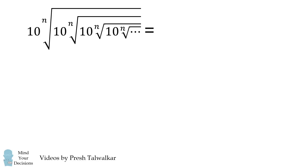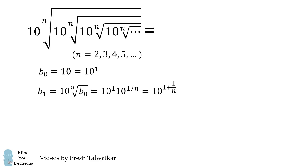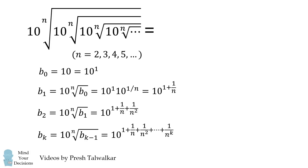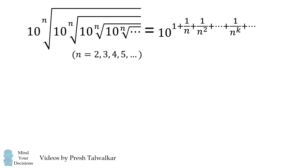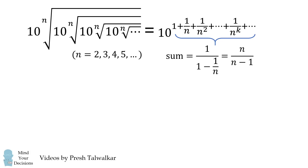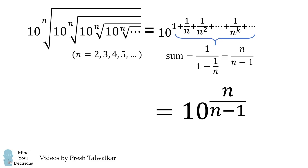Now let's consider the nth root variation. This is very much like the square root problem. The first term is 10 to the power of 1, and each subsequent term equals 10 times the nth root of the previous term. Working out the pattern gives a geometric series with common ratio 1/n. Solving gives the answer of 10 to the power of n over (n minus 1). Notice that substituting n equals 2 gives 10 squared, exactly matching the first problem.